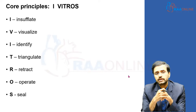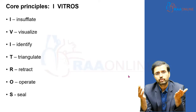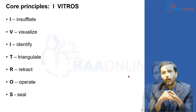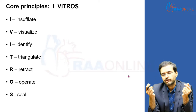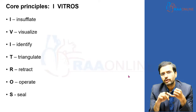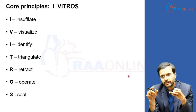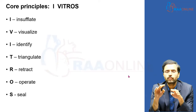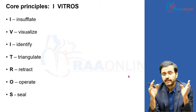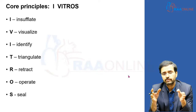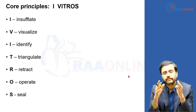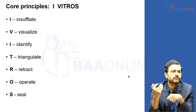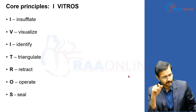R is for retract — retraction of organs so that visualization of the organ of interest is much better. O is to operate on the organ of interest, in the form of either removal, incision of a portion, or anastomosis. S is for seal, referring to hemostasis — securing hemostasis from any bleeder. All these form the core principles of minimally invasive surgery, particularly laparoscopy.